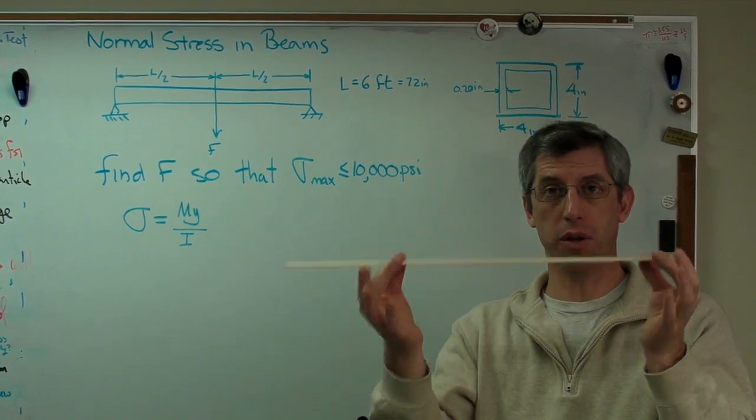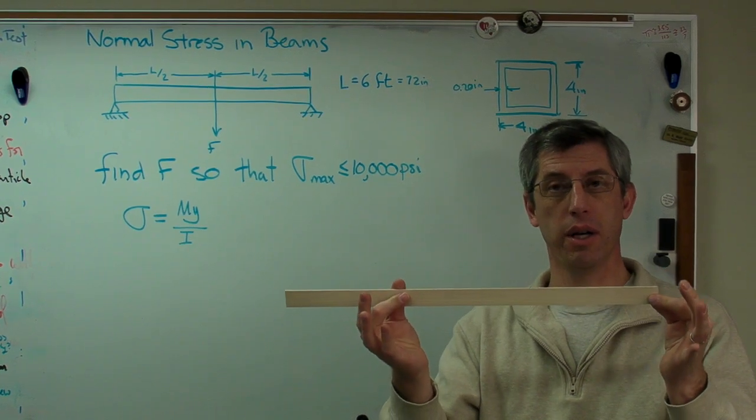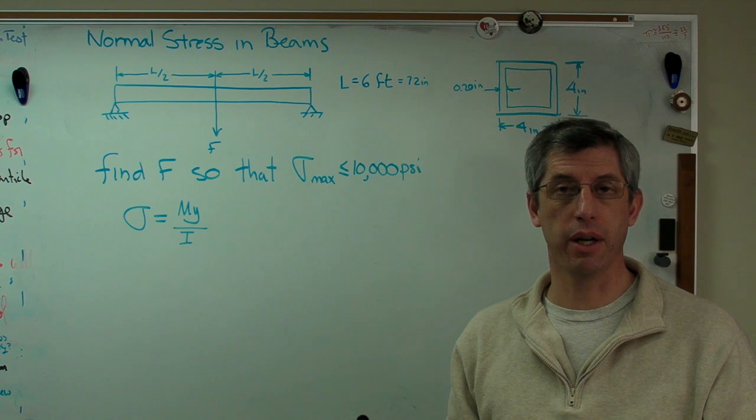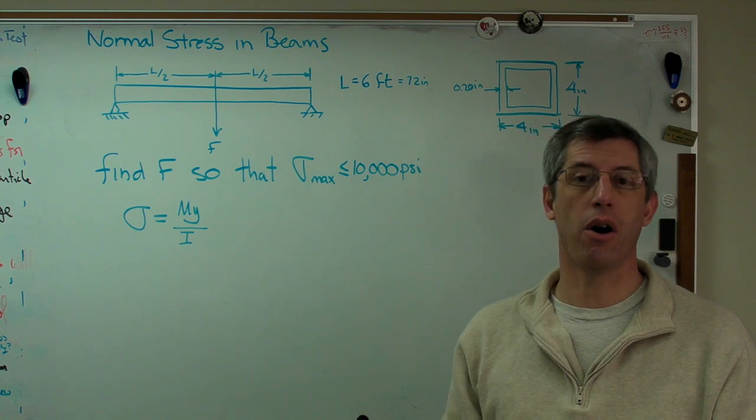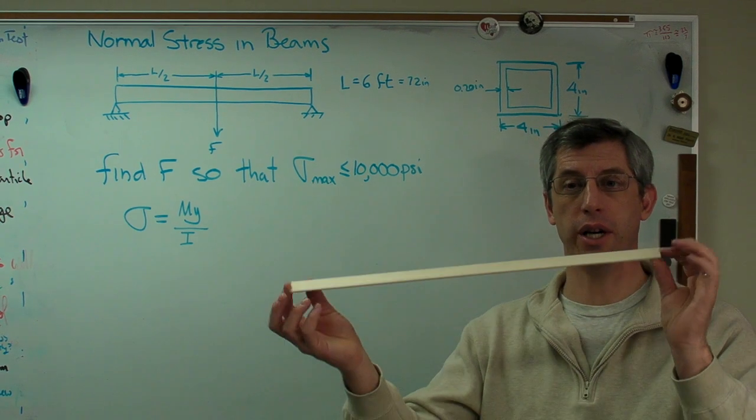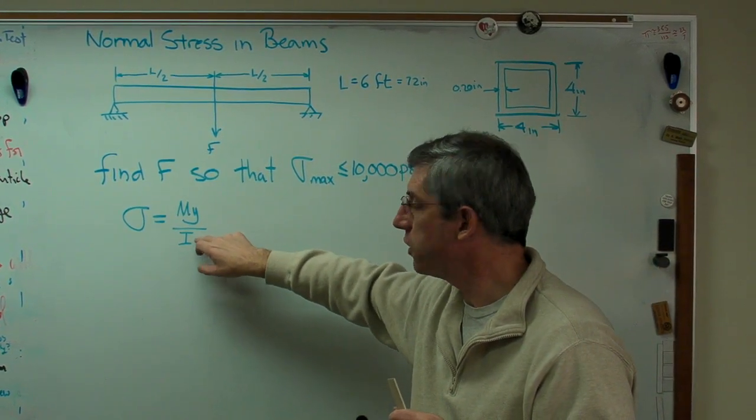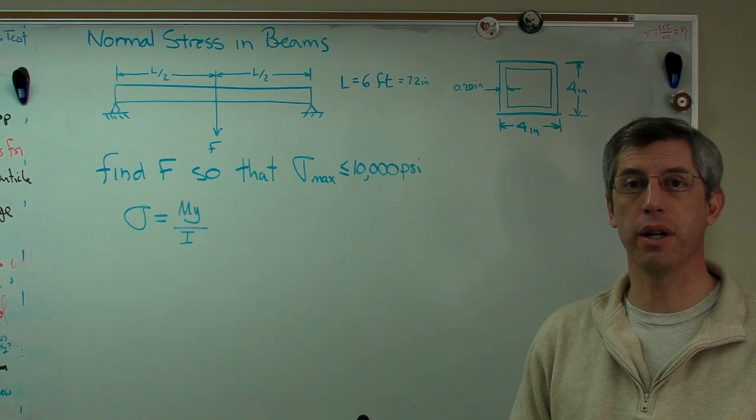So the only thing that's changed between here and here is its orientation. I haven't changed the material. I haven't changed the cross-sectional area. I haven't changed the weight. All I've changed is orientation to go from here to here. That orientation, the stiffness due to that, is reflected in the term I.